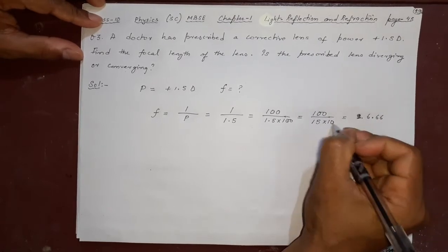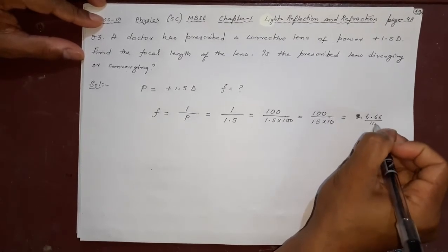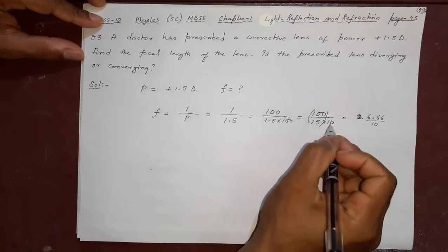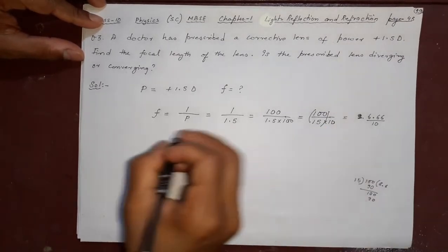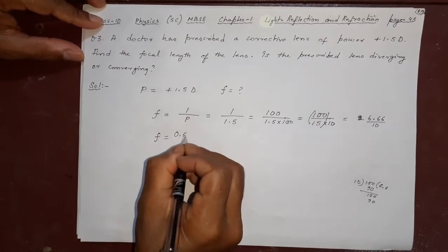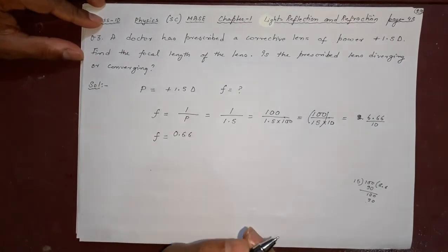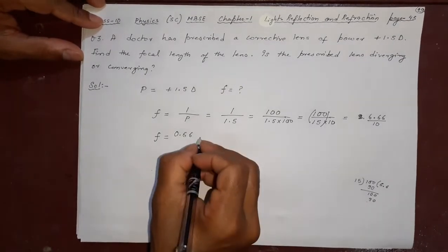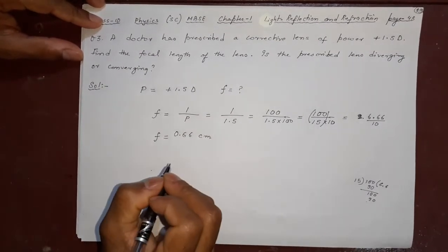What is this going to be? F equals 0.66, 6 continuing like this. Or you can write 0.67 also. Centimeter? Not centimeter.